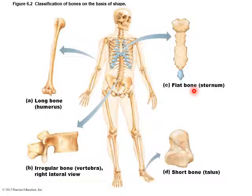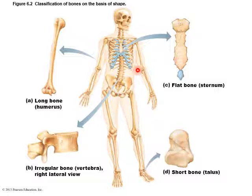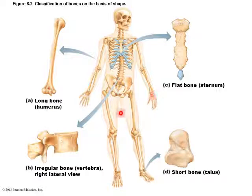Flat bones are confined mostly to the axial part of the skeleton. Skull bones, ribs, and the sternum are flat — they have a different structure microscopically. Short bones are found mainly in the bones that make up the back of the foot, called tarsals, and the wrist has short bones called carpals.